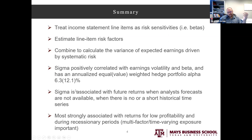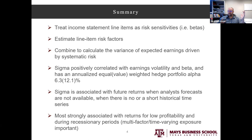Sigma has an annualized alpha — meaning the portion unexplained by other risk factors — of around 6% or 12% depending on equal or value weighting, which we think is reasonable as a return to risk. Sigma is also associated with returns when analyst forecasts are unavailable. Some papers use analyst forecasts for expected earnings beta, but our measure works even when that doesn't exist. It also works without a long time series.